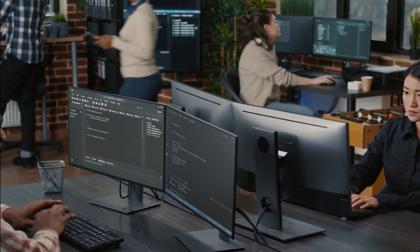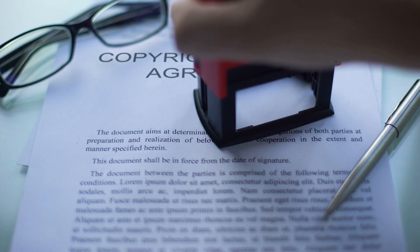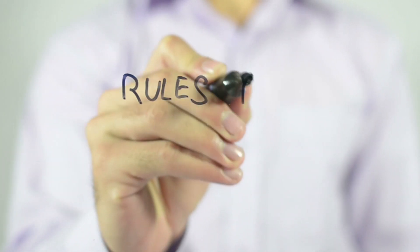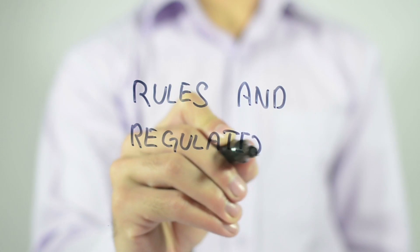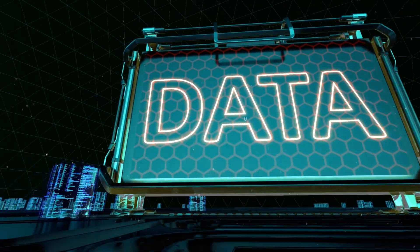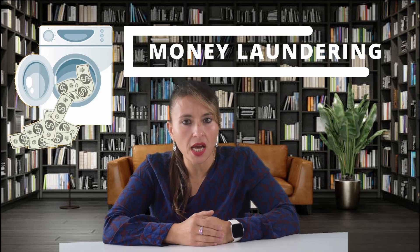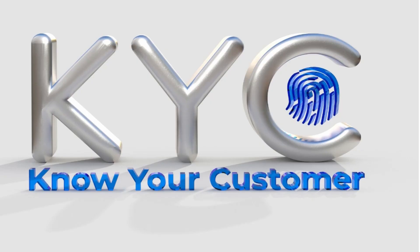When it comes to regulation, centralized exchanges are official companies — they have offices, employees, and even shareholders. They fall under strict regulation as they need to obtain operating licenses in many jurisdictions, making them more liable to follow countries' rules and regulations. Being centralized means users are required to provide personal data and bank details when signing up with the exchange, to avoid money laundering as part of KYC (Know Your Customer) and AML (Anti-Money Laundering) compliance.